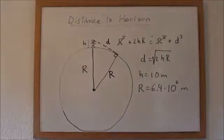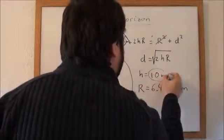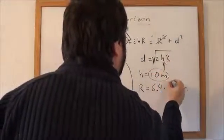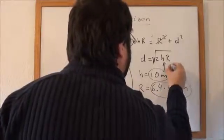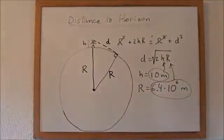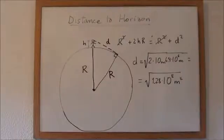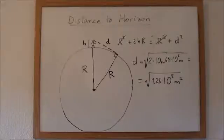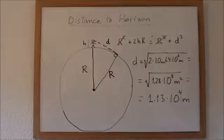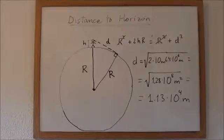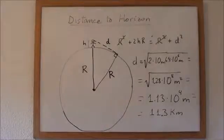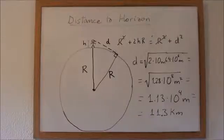Let's replace this in the formula. That is 1.28 times 10 to the 8th square meters. That is 1.13 times 10 to the 4th meters, or 11.3 kilometers.